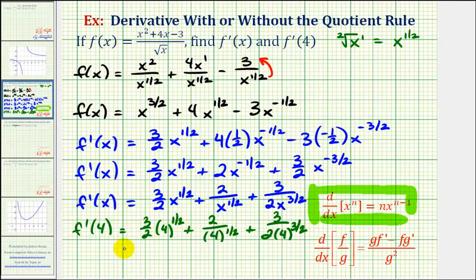Now to save some time I've already determined this value, it's actually equal to 67 sixteenths, which is equal to four-point-one-eight-seven-five.